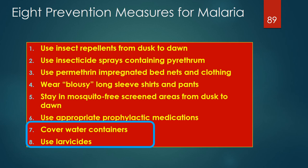Cover water containers to decrease breeding sites near houses. Larvicides will likely have a limited impact since Anopheles mosquitoes can travel up to 4 kilometers to feed — to be effective, all standing water within that 4-kilometer radius would need to be treated with larvicide, which would be difficult in most malaria endemic areas.